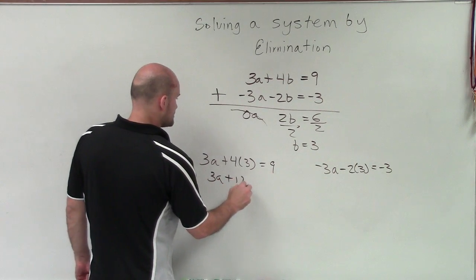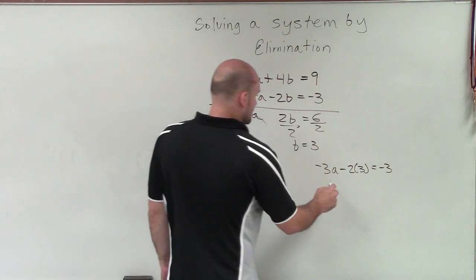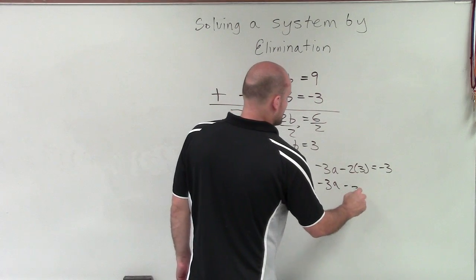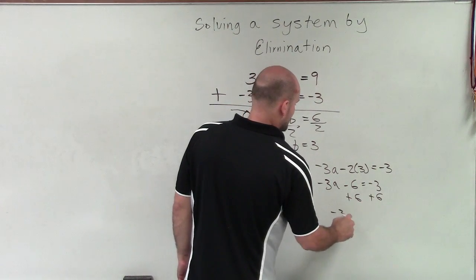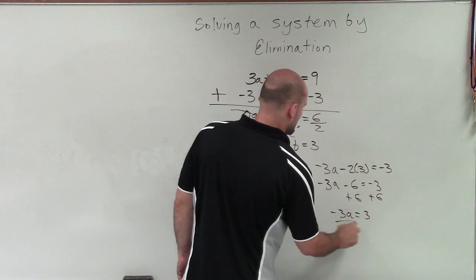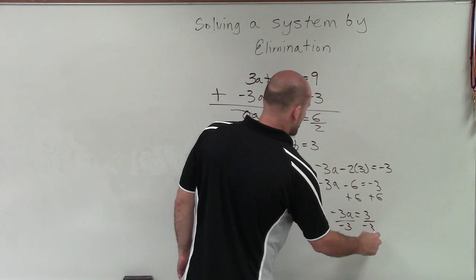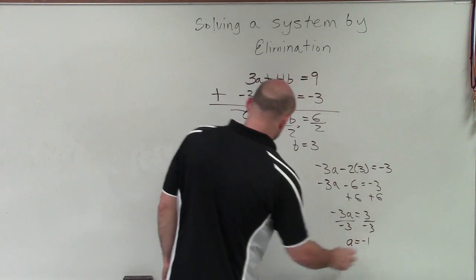So therefore, I have 3a plus 12 equals 9. Here, I have negative 3a minus 6 equals negative 3. Well, I'll add 6 here. So I have negative 3a equals 3, divide by negative 3, and a equals negative 1.